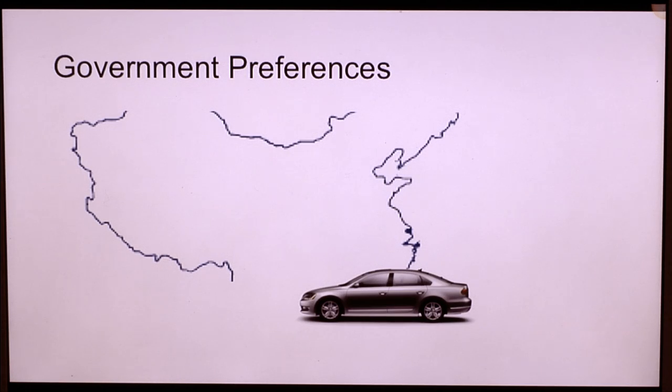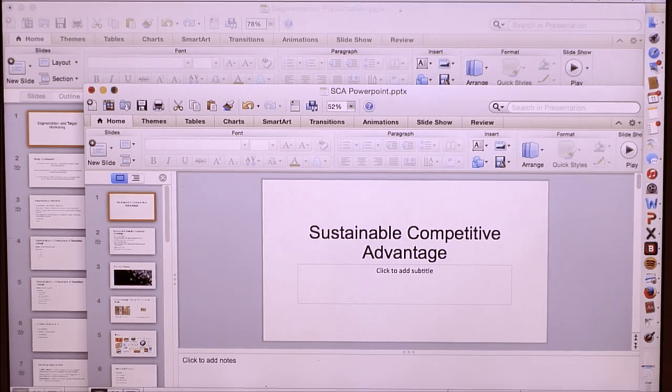Government preferences, I like to think about China here. China has a policy which encourages government agencies and government-controlled businesses to buy Chinese-made automobiles. That effectively allows the Chinese companies to have a barrier to entry for foreign companies that gives them an advantage in the marketplace. So those are the ones that I usually talk about.